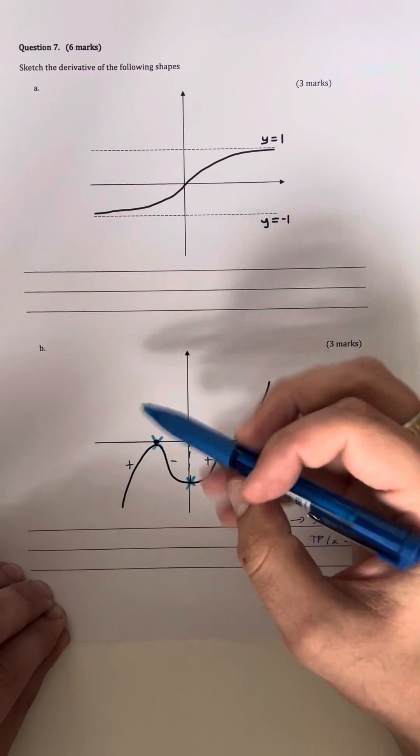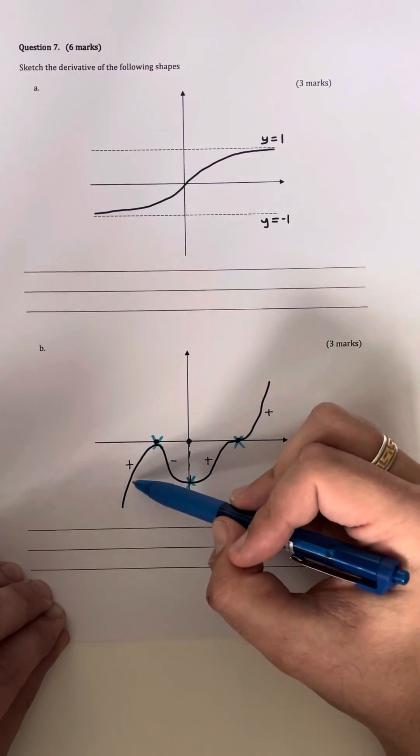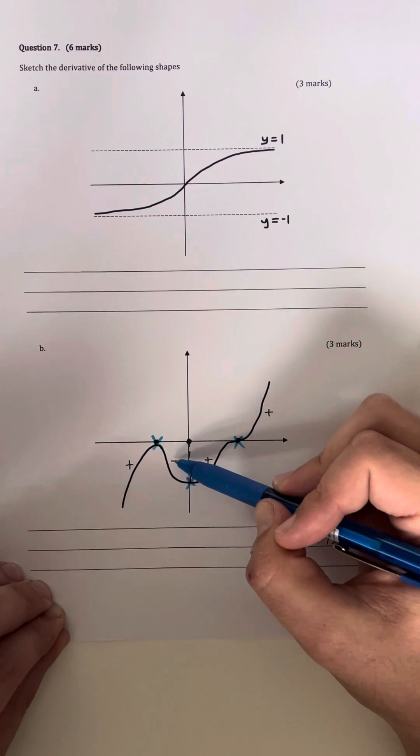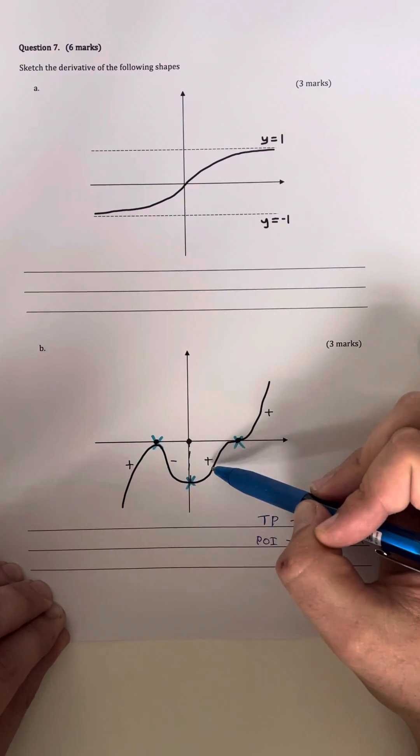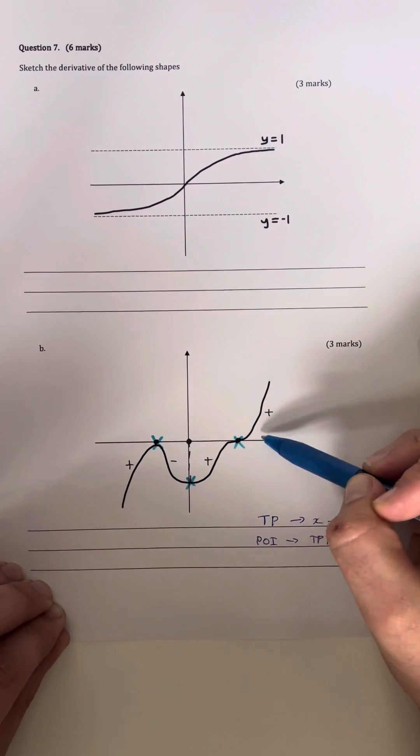Now what I need to do as well is find when my gradient is going to be positive or negative based on the shape of my original function. So it starts off as a positive gradient, transitions to a negative after the turning point, transitions back to a positive after the second turning point, and then remains positive after the point of inflection.